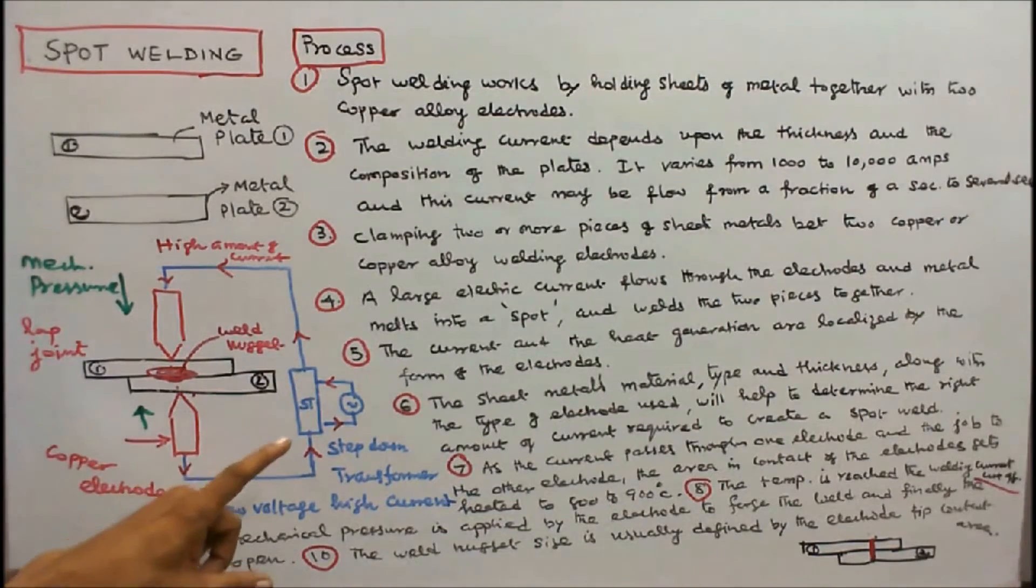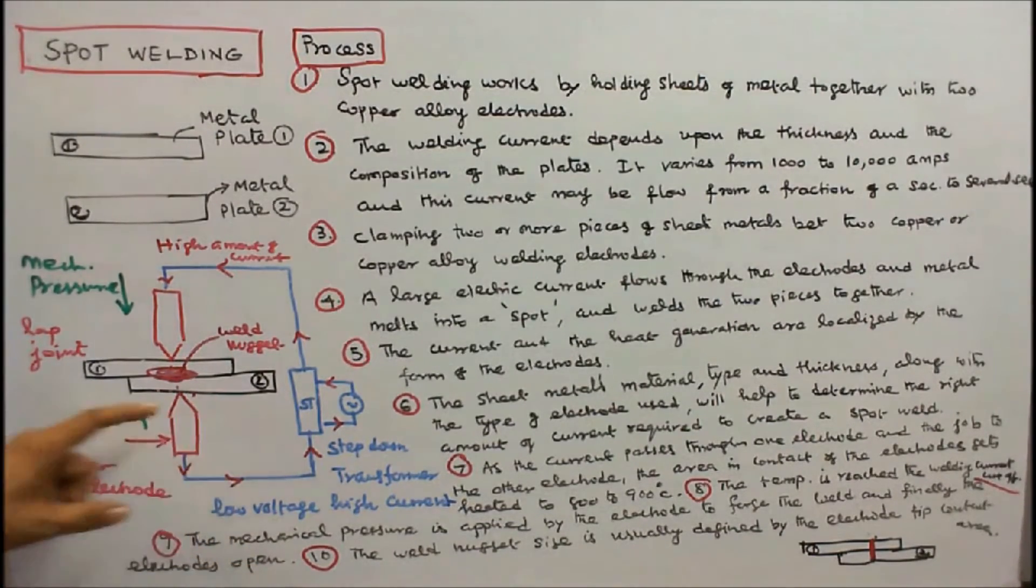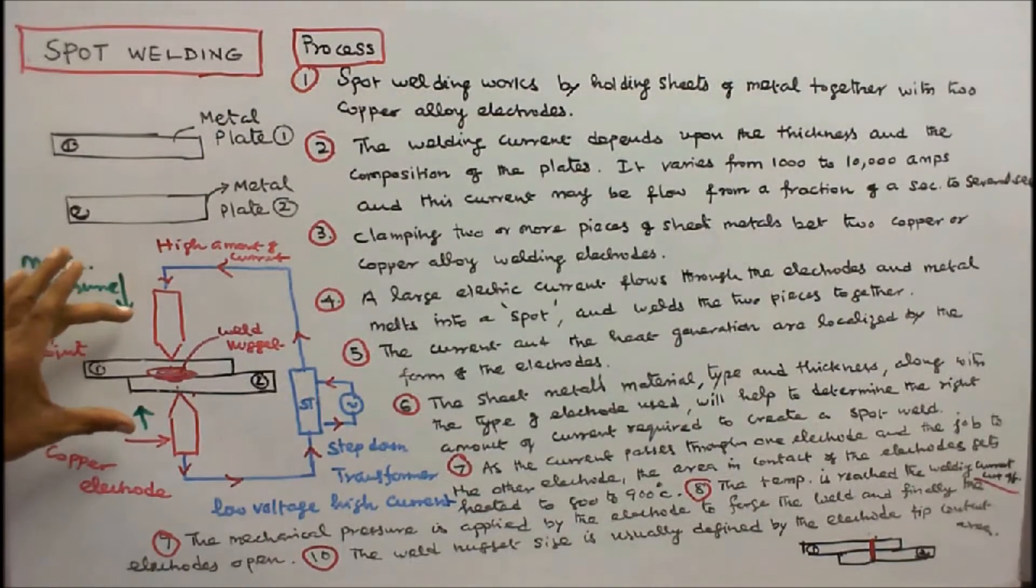The mechanical pressure is applied by the electrode to forge the weld and finally the electrodes open.